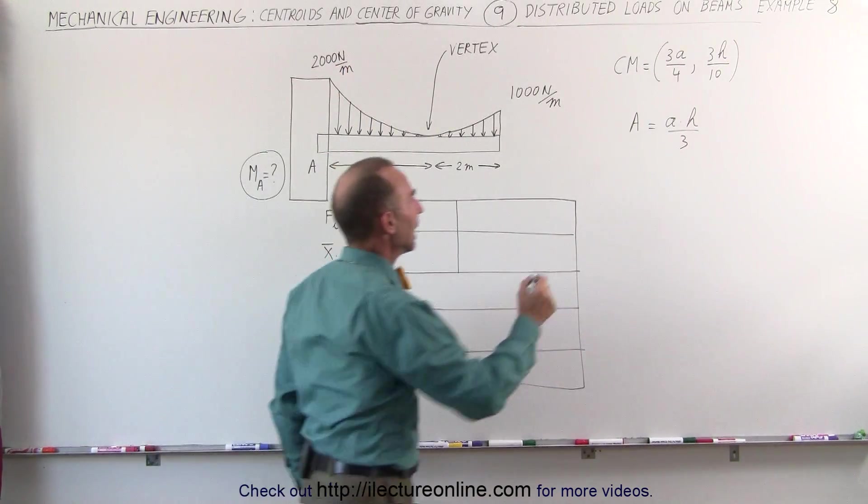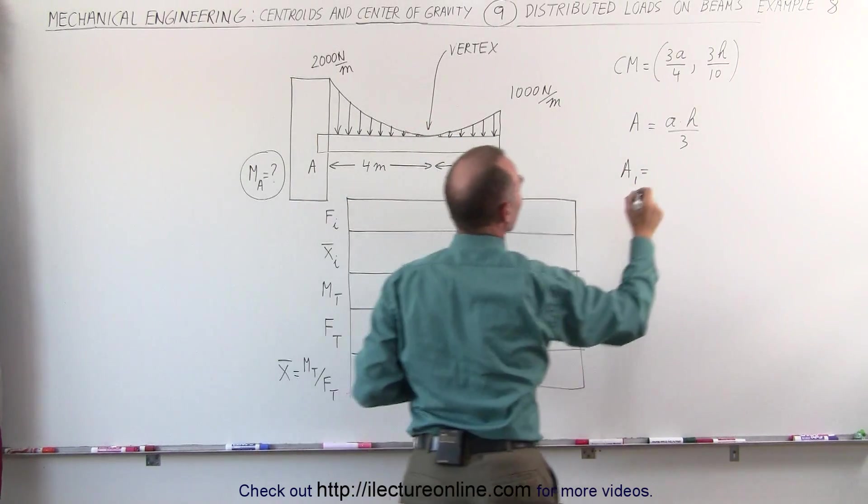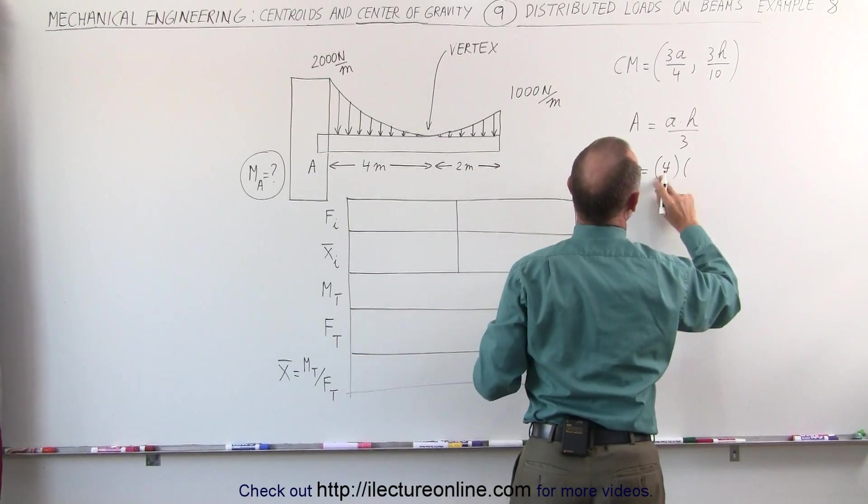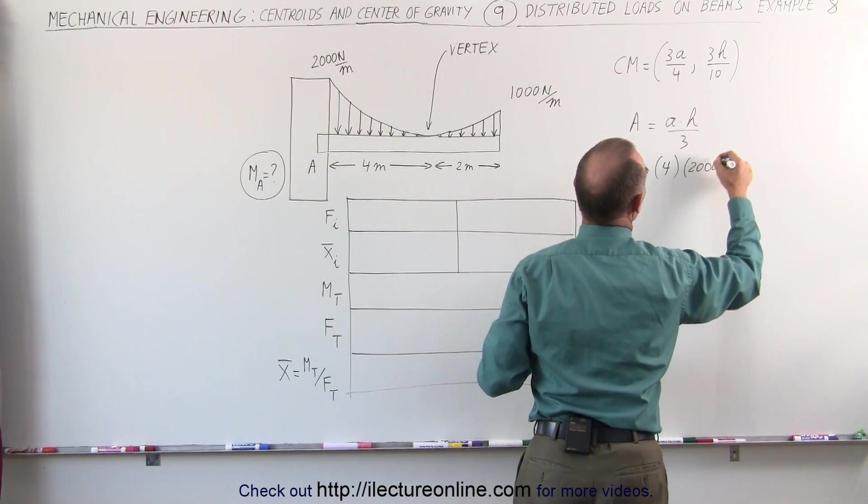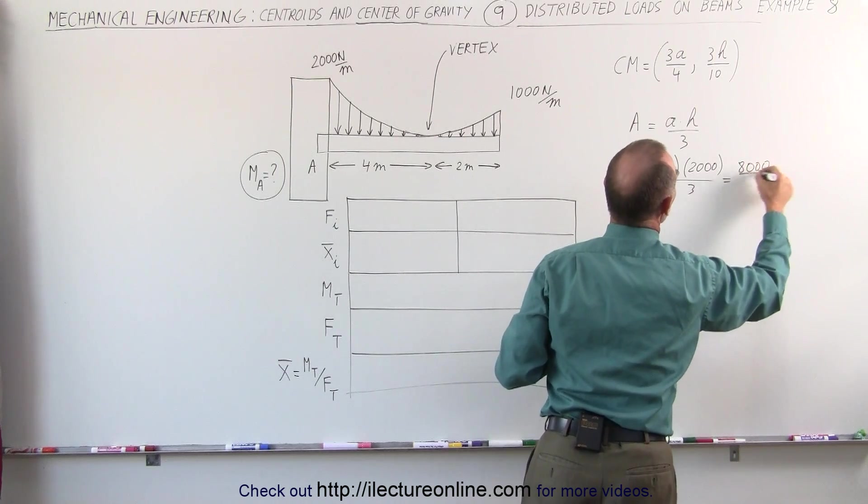So the area number 1, A number 1, is equal to A which is 4 meters, multiplied by the height, which is 2000 N per meter, divided by 3, which is equal to 8000 divided by 3.